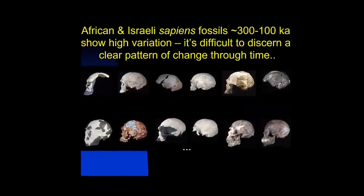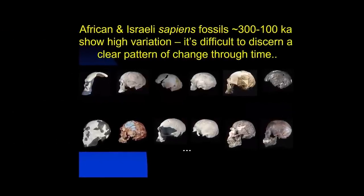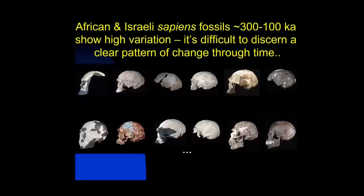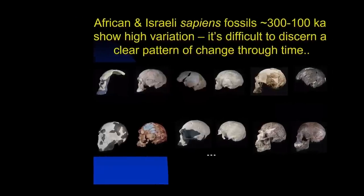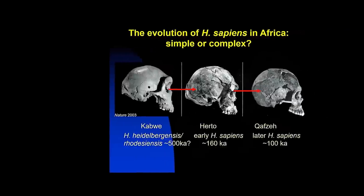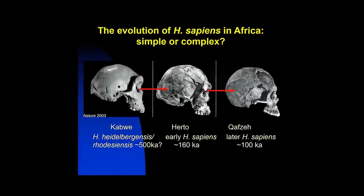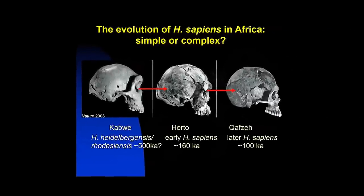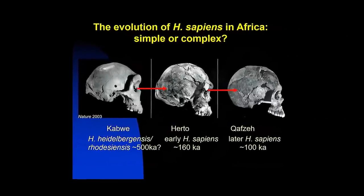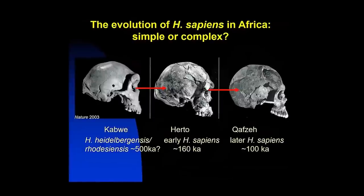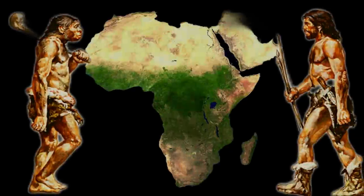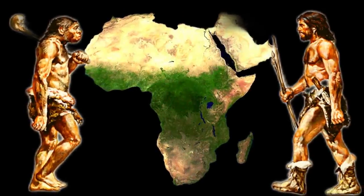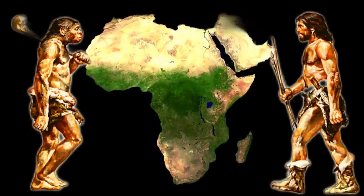Modern humans may have evolved between 350,000 and 260,000 years ago, through a merger of populations in East and South Africa, according to recent research that used 260 CT scans to determine the virtual skull shape of the last common ancestor to modern humans. Some North African fossils may also represent a population that introgressed into Neanderthals.